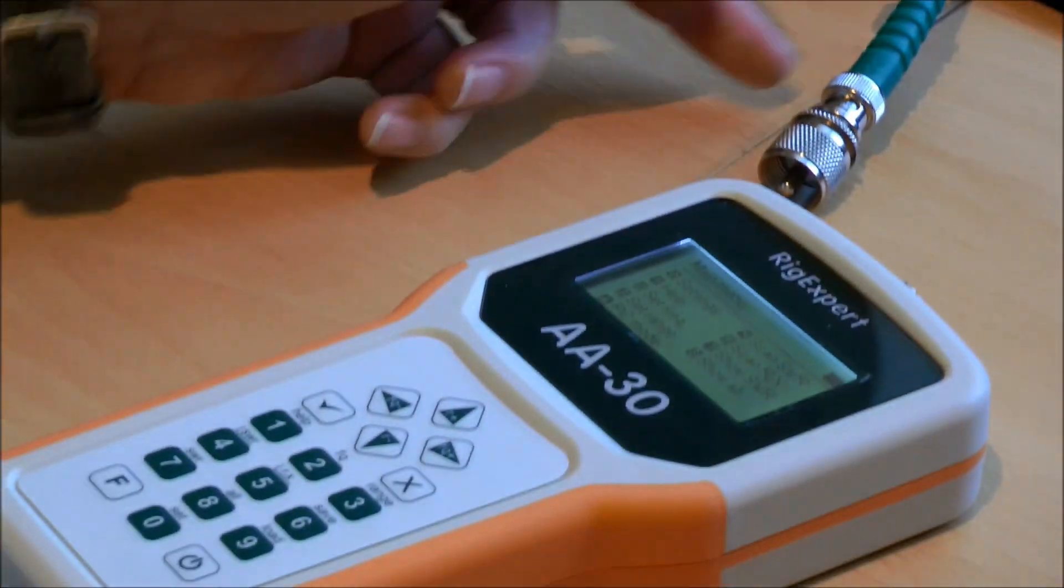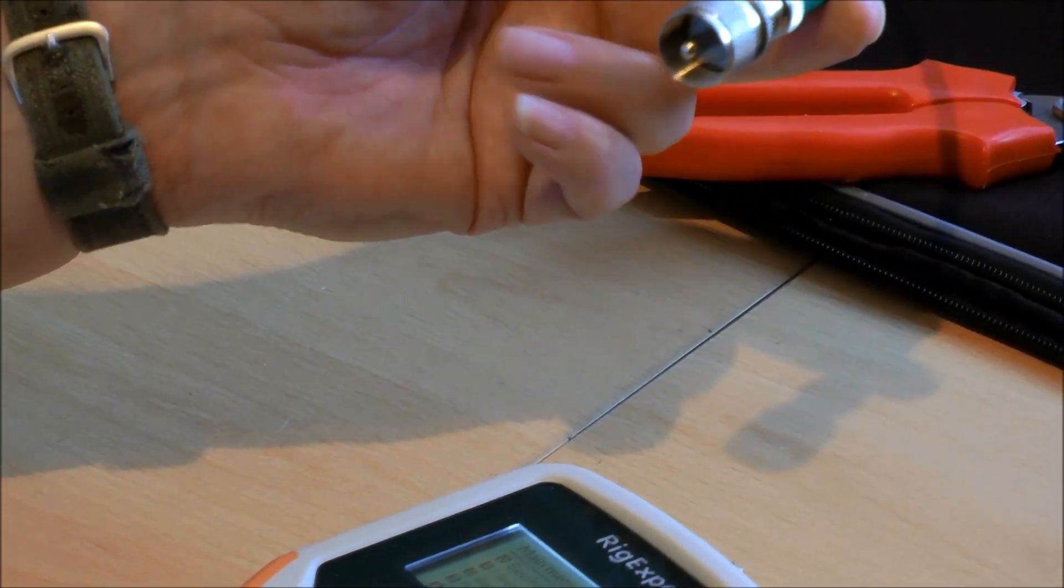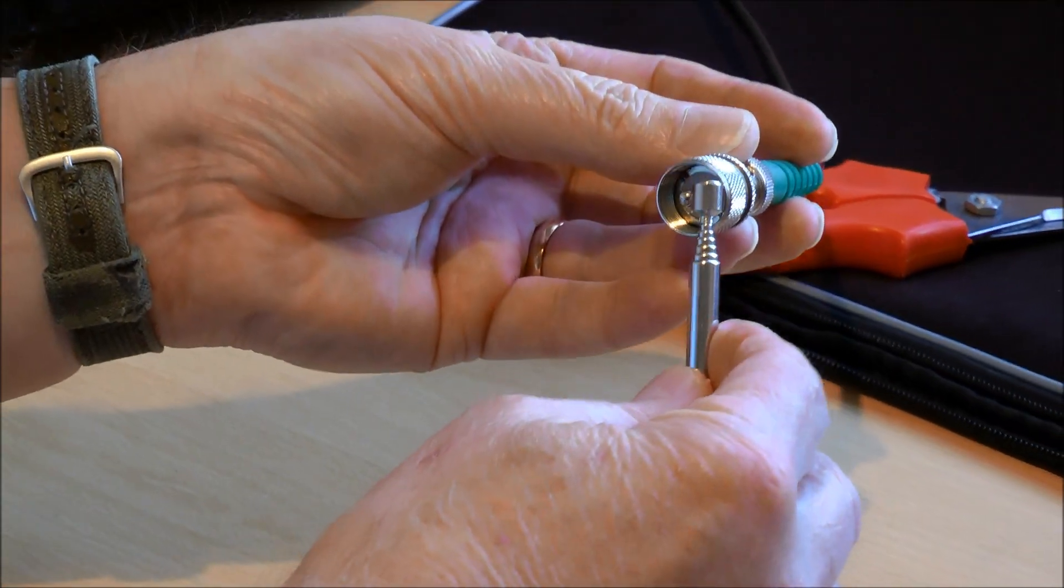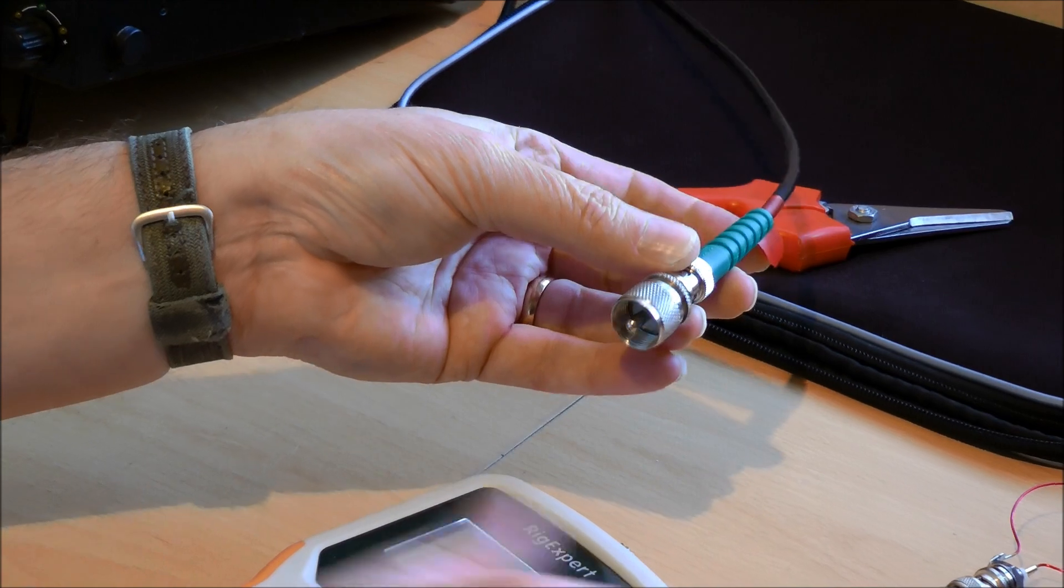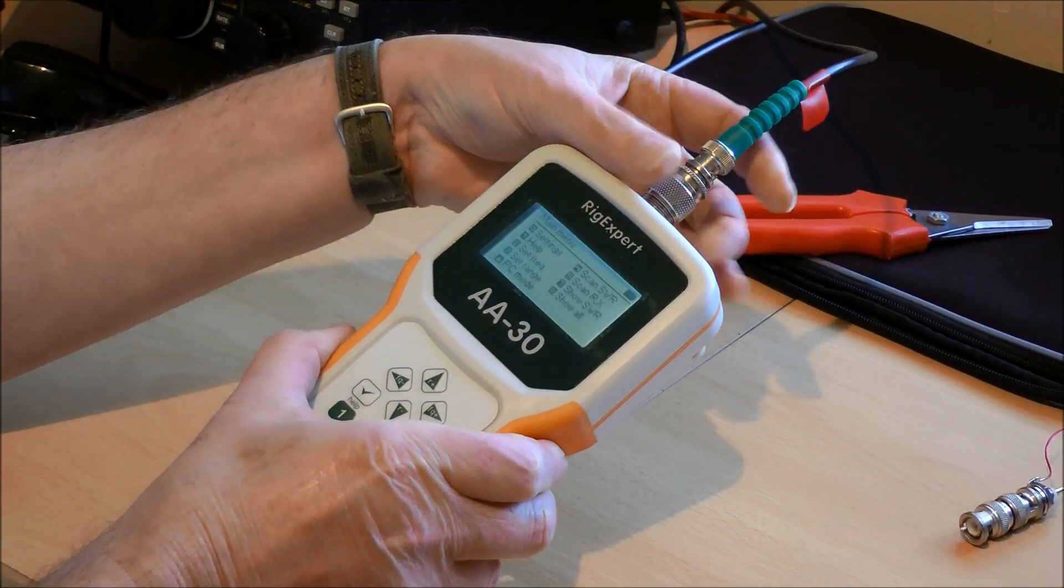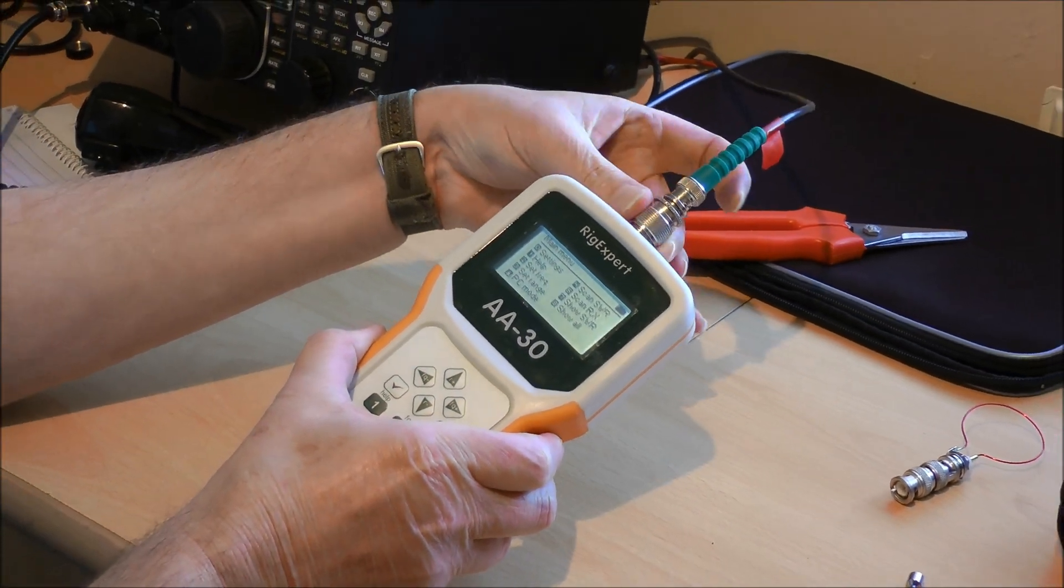This is the antenna, my 6BTV. We'll just short out between the center conductor and the earth, and then plug into the analyzer. So we're going to check now if the SWR is on a given frequency.